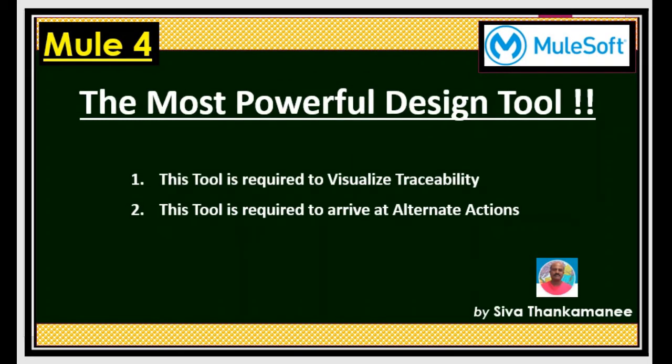To arrive at or to complete this particular stage of the error handling framework, we need to talk about the most important and most powerful design tool that we need to use while designing the error handling framework. This tool is very critical and important — it is required to visualize the traceability, and it is also very important to arrive at the alternate actions when there is an error happening.